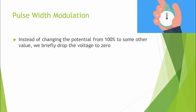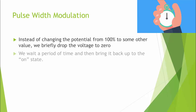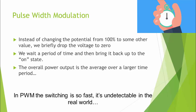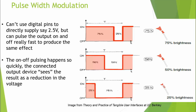Instead of changing the potential from 100% down to, say, 23%, what we do is drop the voltage all the way down to zero, wait a period of time, and bring it back up to the on state — back up to 5 volts. Then we realize that if we switch back and forth, the average power output is the average of how much time we spent at 5 volts versus how much time we spent at zero volts. In PWM, we do the switching so fast that in the real world — whether it's a motor or an LED — the change is undetectable.